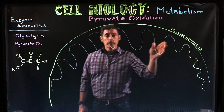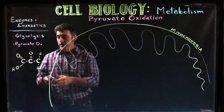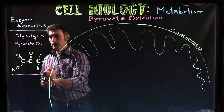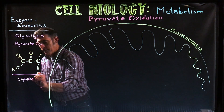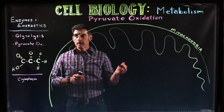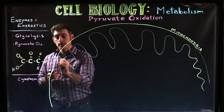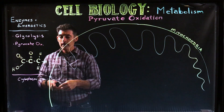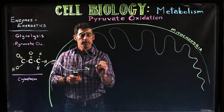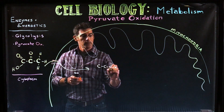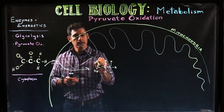We are now at the mitochondria. What just happened is we went through glycolysis, which produced a molecule called pyruvate in the cytoplasm. The process we're going to look at - pyruvate oxidation - occurs inside the mitochondria, so one of the first things that has to happen is transport. The pyruvate molecule has to be moved from the cytoplasm into the mitochondria.